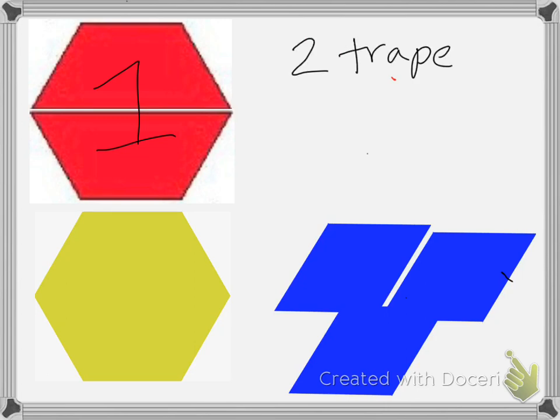So it takes two trapezoids, red ones, to fill the one whole. If I want to say what the name of just one trapezoid is, it is 1/2 of the whole, because one trapezoid—it takes two to fill up the whole, and if I only have one, it's going to be 1/2.